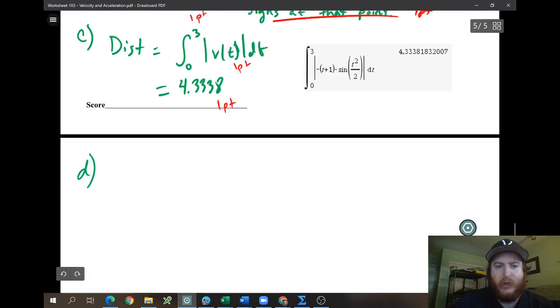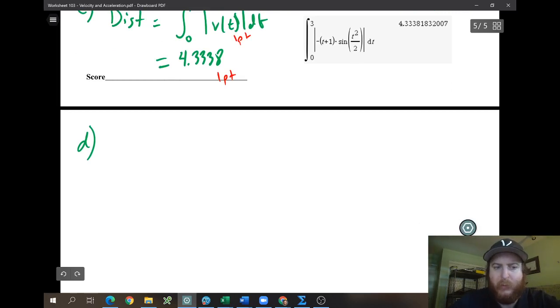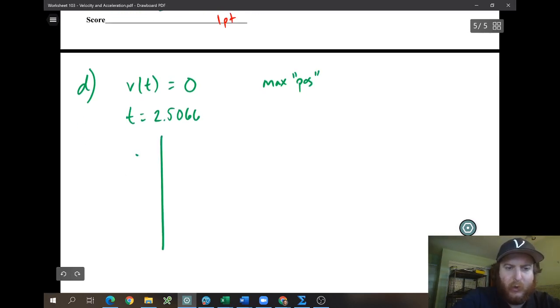So anyways, what we are going to do here is anytime we have that absolute maximum, absolute minimum thing, our first step is to always take the derivative, set it equal to zero. Now, that is the derivative. V of T already is the derivative because we're finding the maximum position, right? Now, it's not really position, but, you know, distance from the origin. So we already did this. We already did 2.5066. And so then we're going to make a table. We always make a table for these absolute maximums.